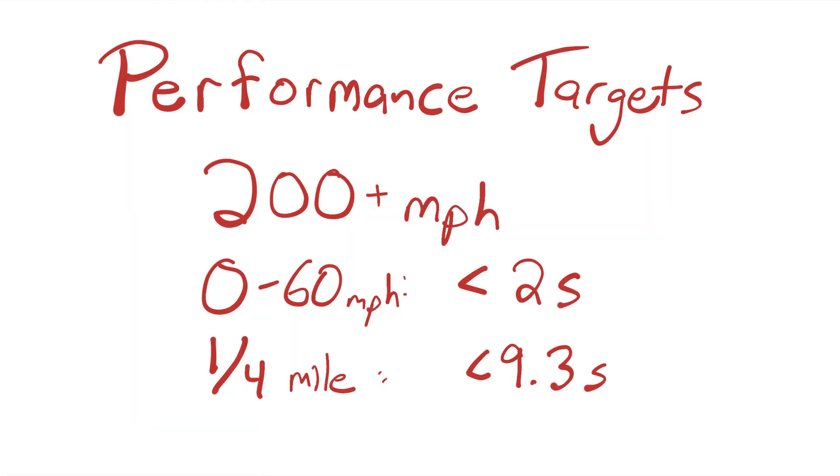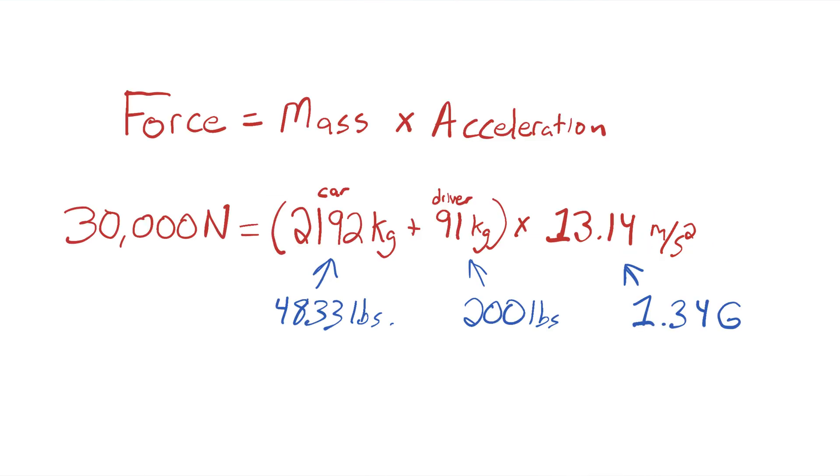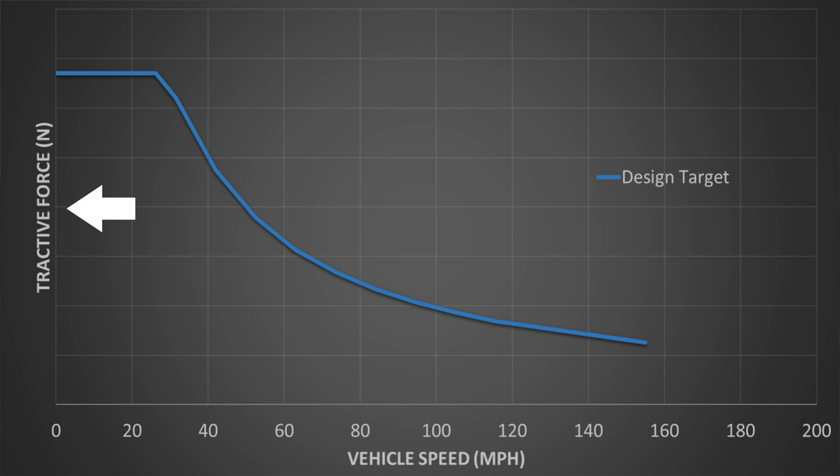When developing a powertrain, you start by understanding the performance targets of the vehicle, and then figure out how much force is needed to achieve those performance targets. You can then put those targets into a tractive force curve, which is also known as a tractive effort curve. This will then tell us how much force needs to be applied to a vehicle at all speeds.